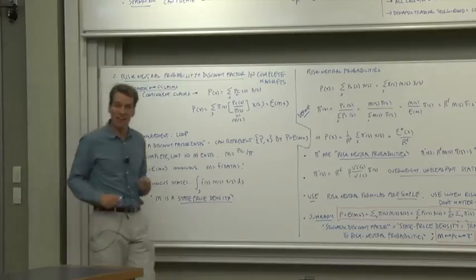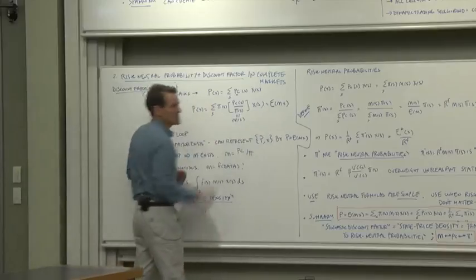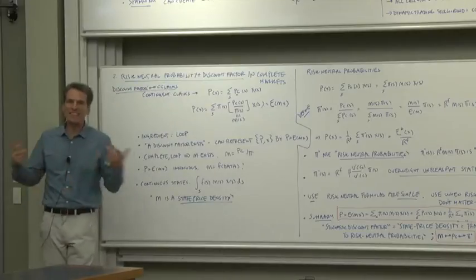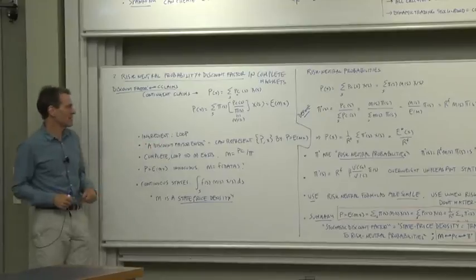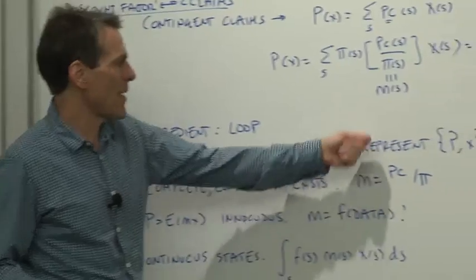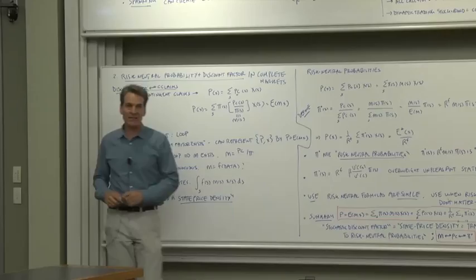So let's think about what we've done. One of our big questions is when can we represent prices by expected discounted payoffs? When does there exist a discount factor? We've just proved a theorem about when a discount factor exists. When can we represent a set of prices and payoffs by price equals expected discounted payoffs?